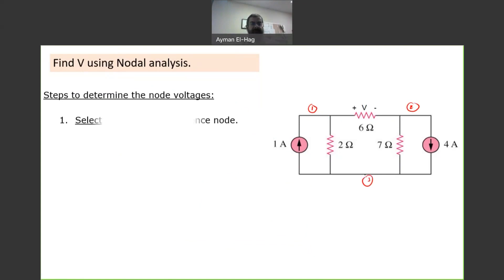Now, what are the steps? First, we need to select a node as a reference. And all the voltages that we will calculate will be with respect to this reference node. Now, when we have only current sources, as in this example, it doesn't really matter where you select your reference.